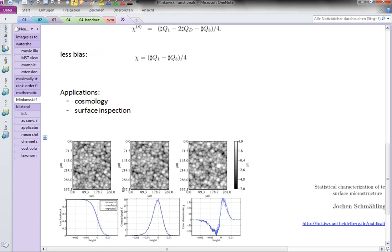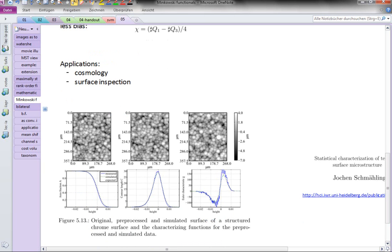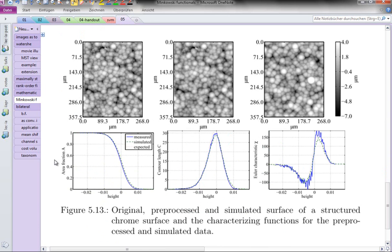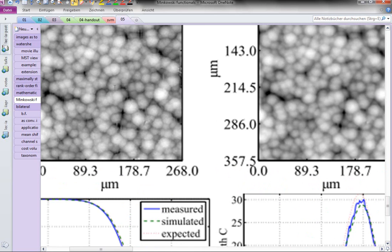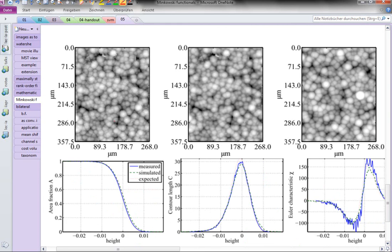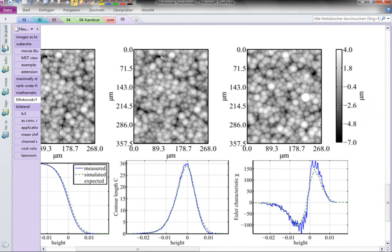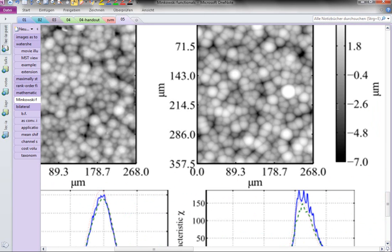I've shown here a more mundane application. Jochen Schmeling worked in surface inspection. Shown here is on the top left an original height map of some sample, then in the middle a smooth version thereof. Jochen probably used the median filter to get rid of some artifacts in the height map. If you look really closely, there are for example some streaking artifacts here, and those streaking artifacts are gone in the filtered version.